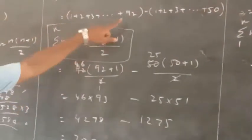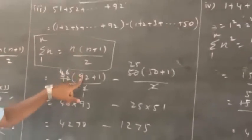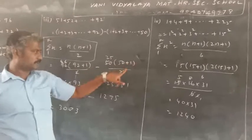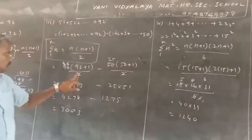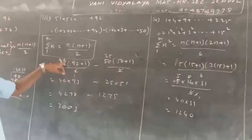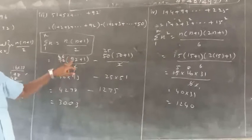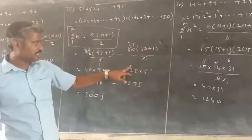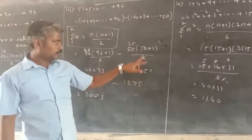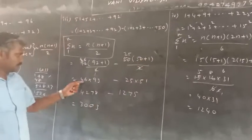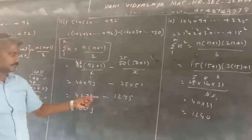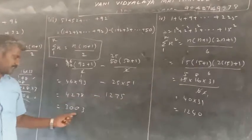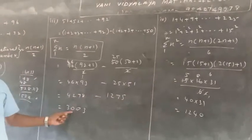Next step: n value is 92, so 92 into 92 plus 1 by 2, minus 50 into 50 plus 1 by 2. 92 plus 1 is 93, 50 plus 1 is 51. So this 2 value multiple means this answer, minus this 2 value multiple means this answer. The subtraction gives the answer 3003.